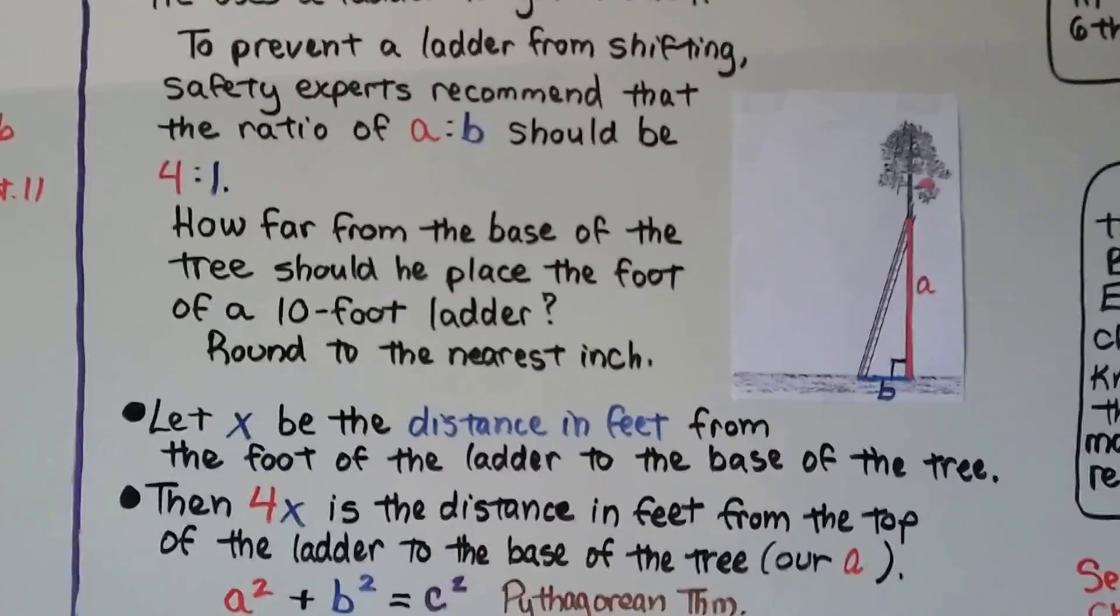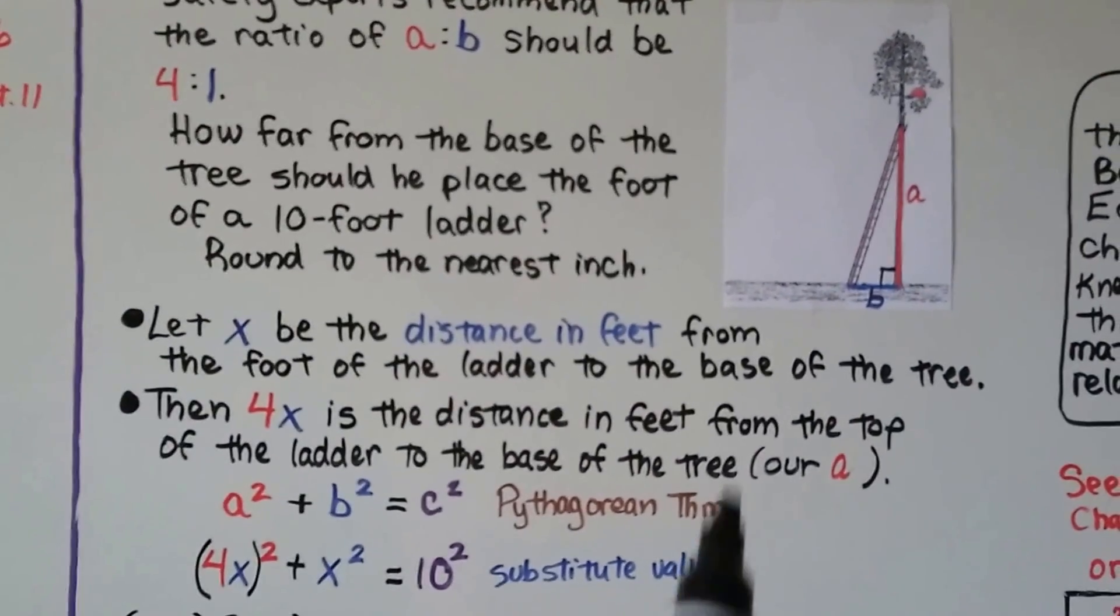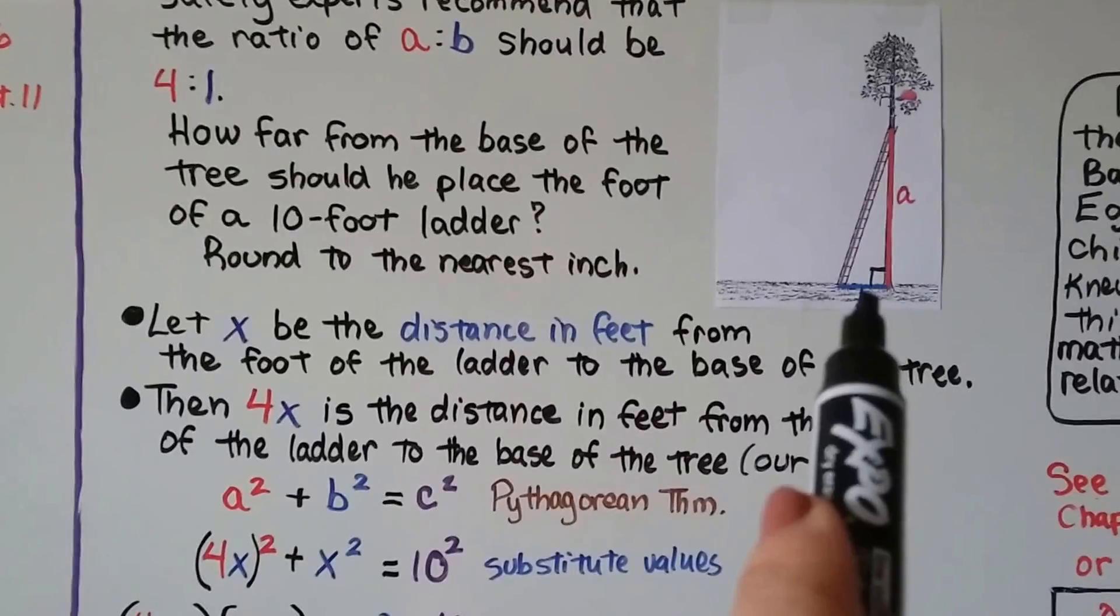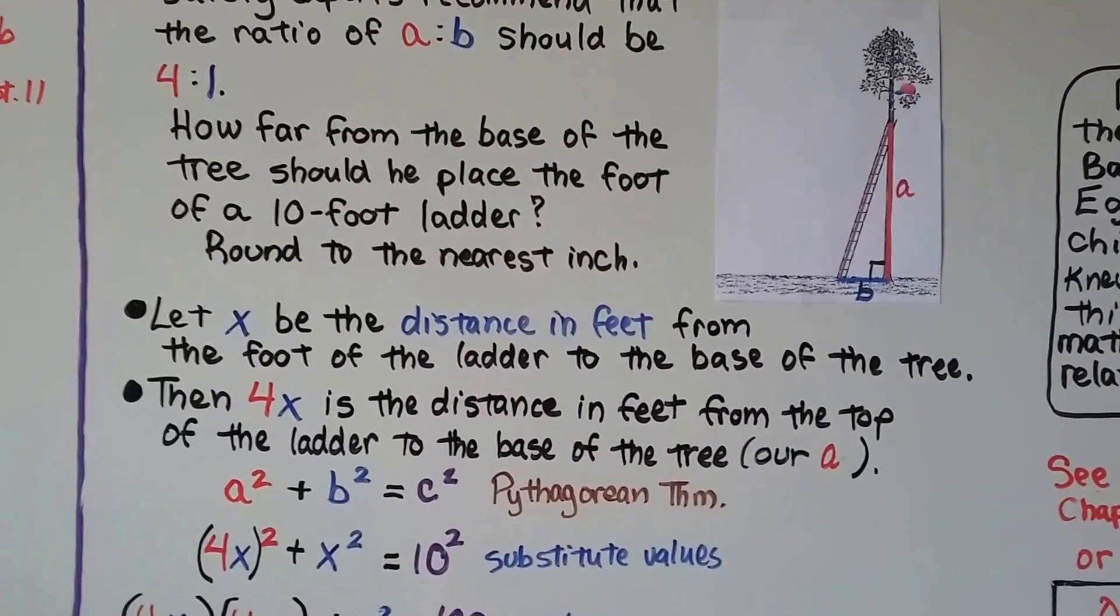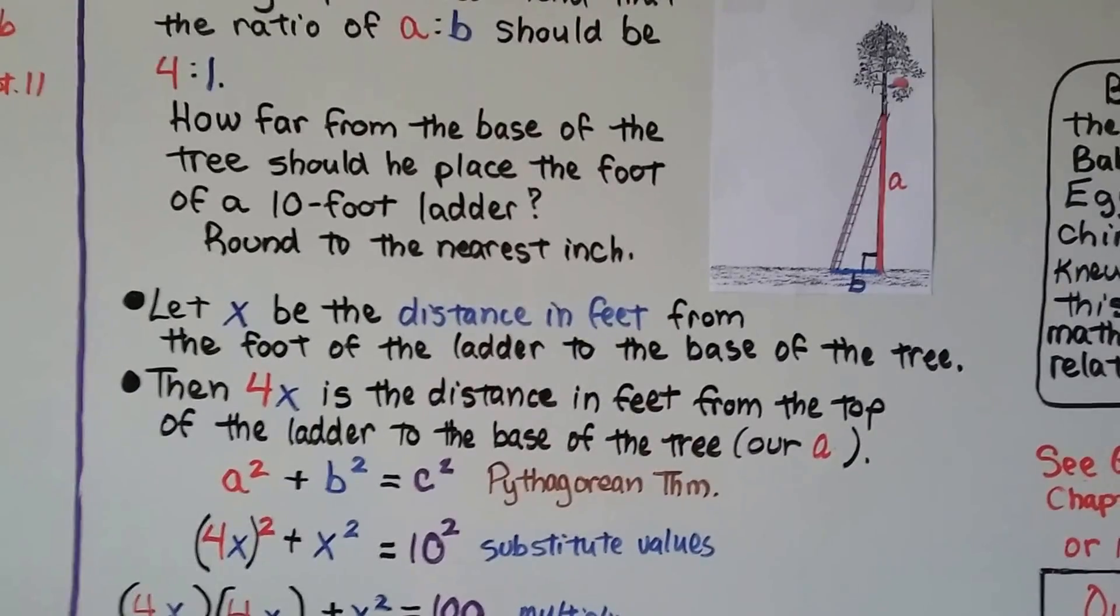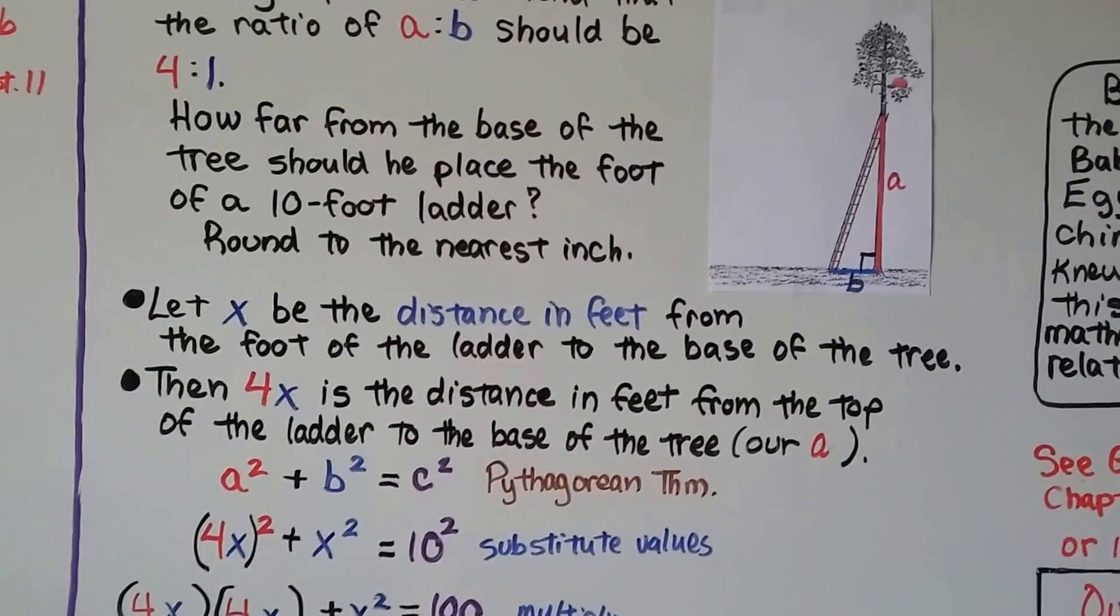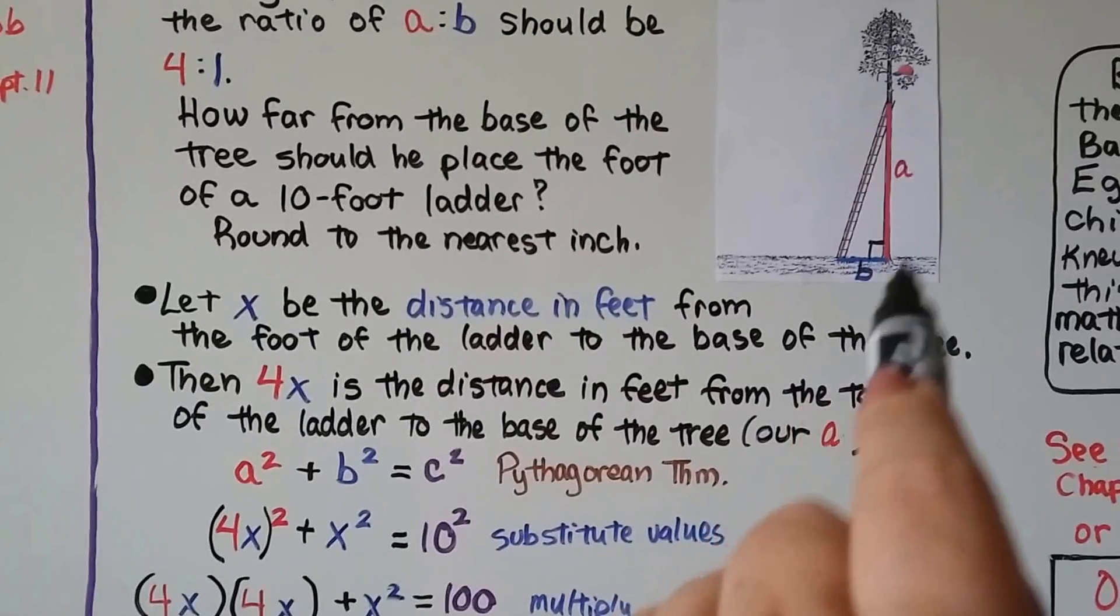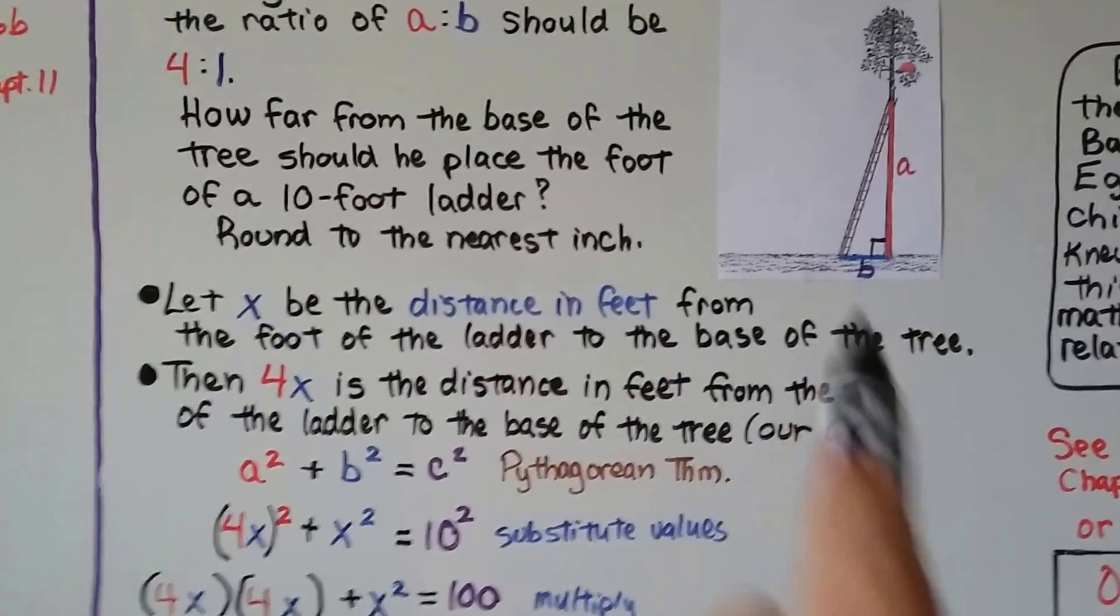So how far from the base of the tree should he place the foot of a 10-foot ladder? We need to round it to the nearest inch. So we're going to let the distance in feet from the foot of the ladder to the base of the tree, instead of B, we're going to use x. Then 4x is the distance in feet from the top of the ladder to the base of the tree. That's our A. Because remember the ratio is 4 to 1. So now we've got 4x and x.